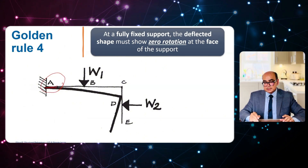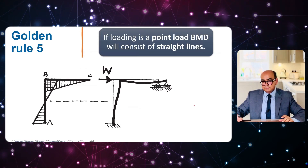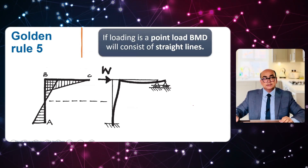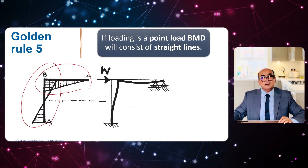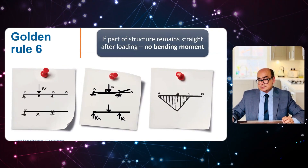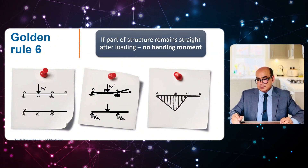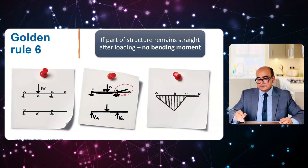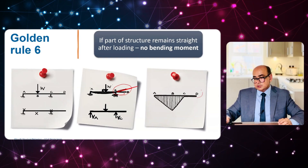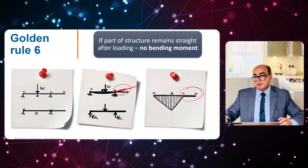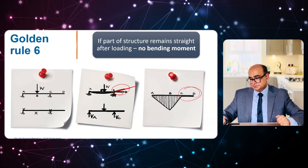At support A, there is no rotation at all, so angle theta is zero. Golden rule five: if the loading is a point load, then the BMD will always be a straight line. Golden rule six: if the structure remains straight after loading, no bending moment occurs. Between C and D the structure is straight, so there will be no bending moment at that portion.